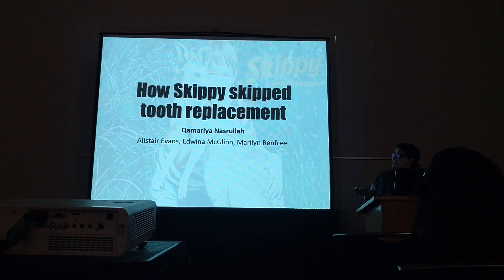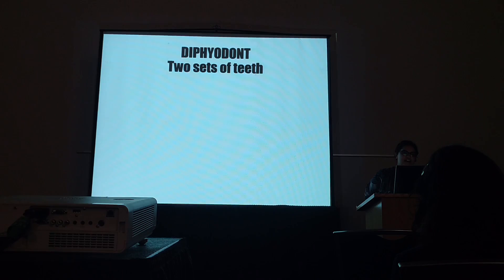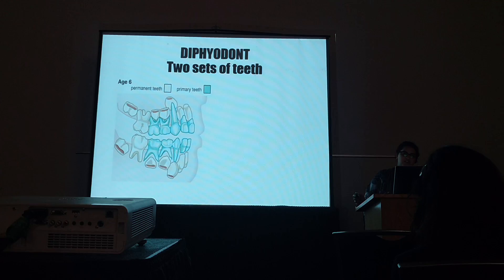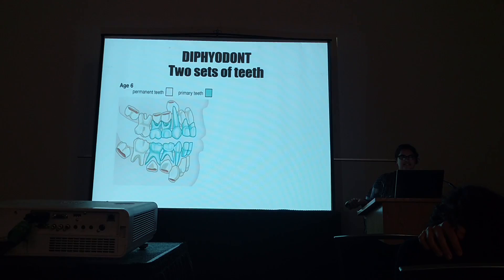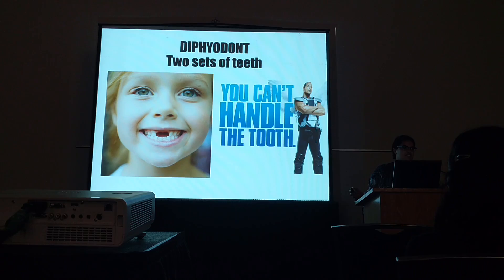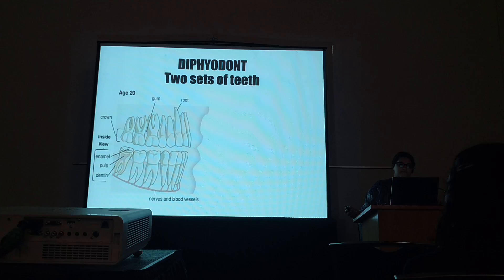Like us, many mammals are diphyodonts, and that means that they have two sets of teeth in their lifetime. Here we have a young human which has the primary set of teeth — that's our milk teeth. We lose these, and then Dwayne Johnson creeps in at night and steals them, but luckily we get another set of teeth in our life: our permanent dentition.